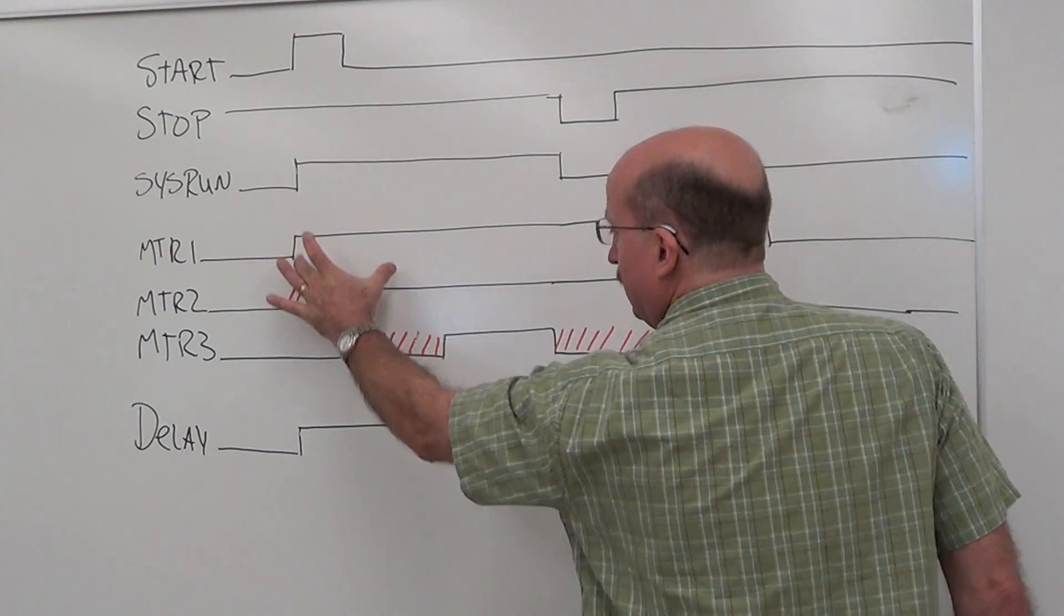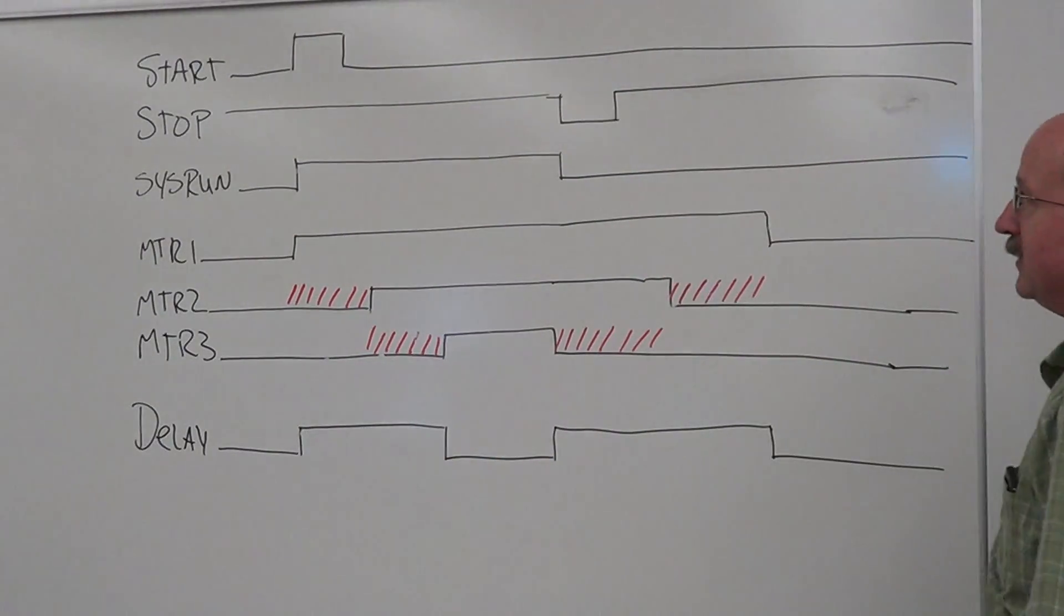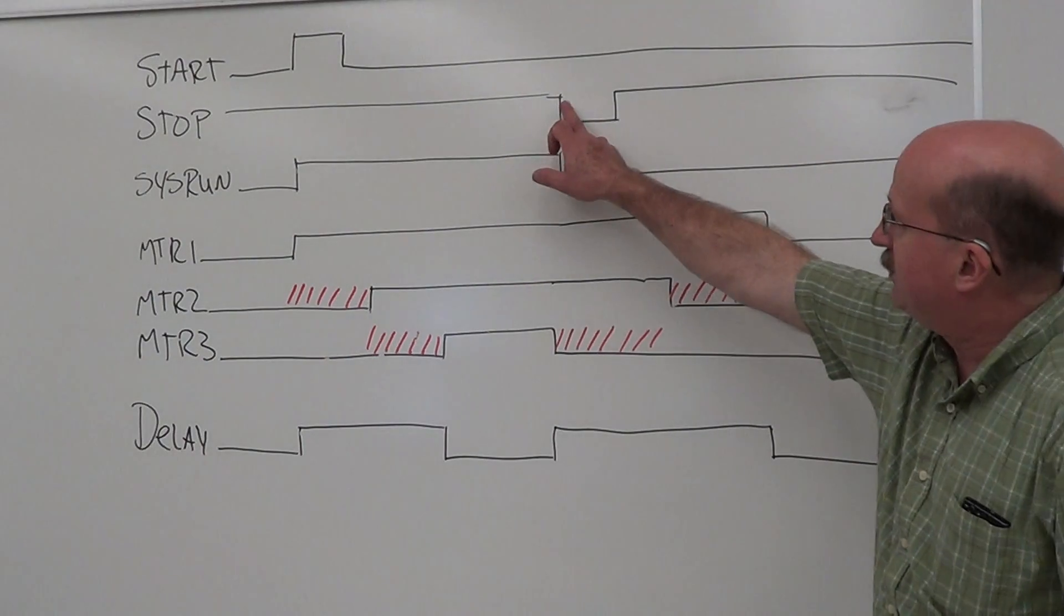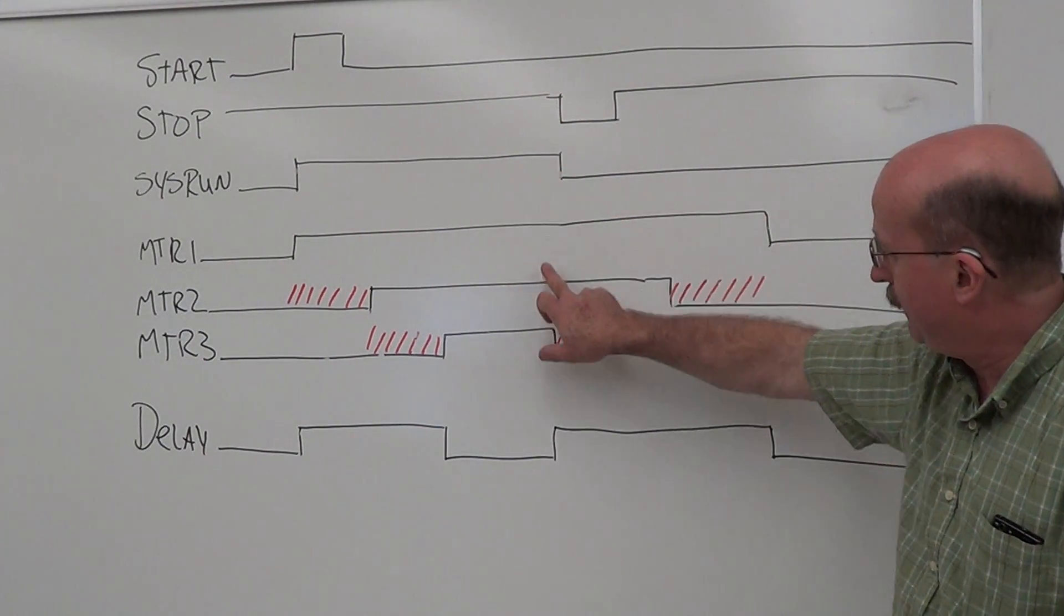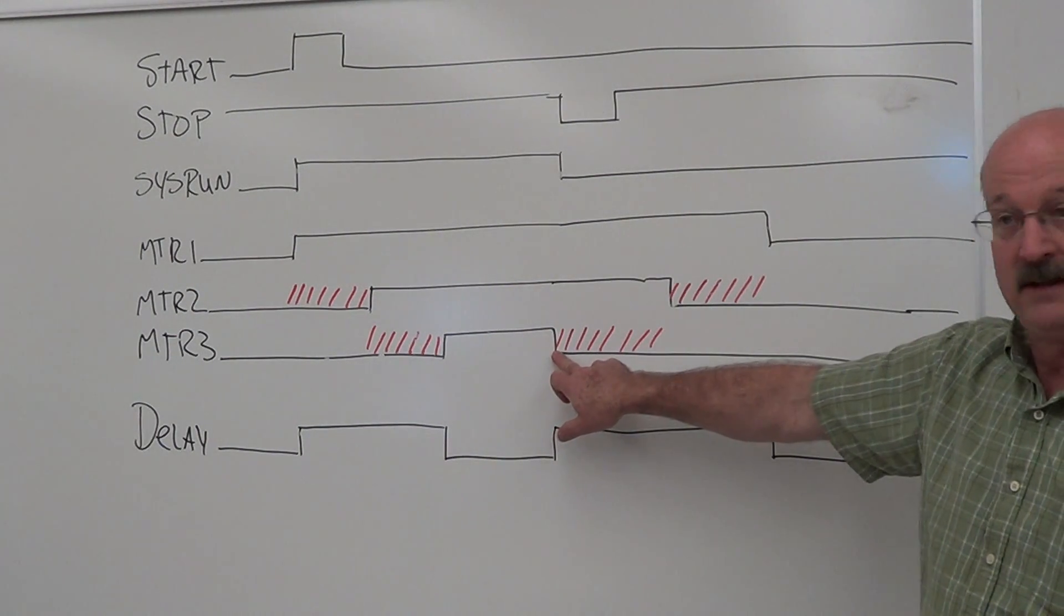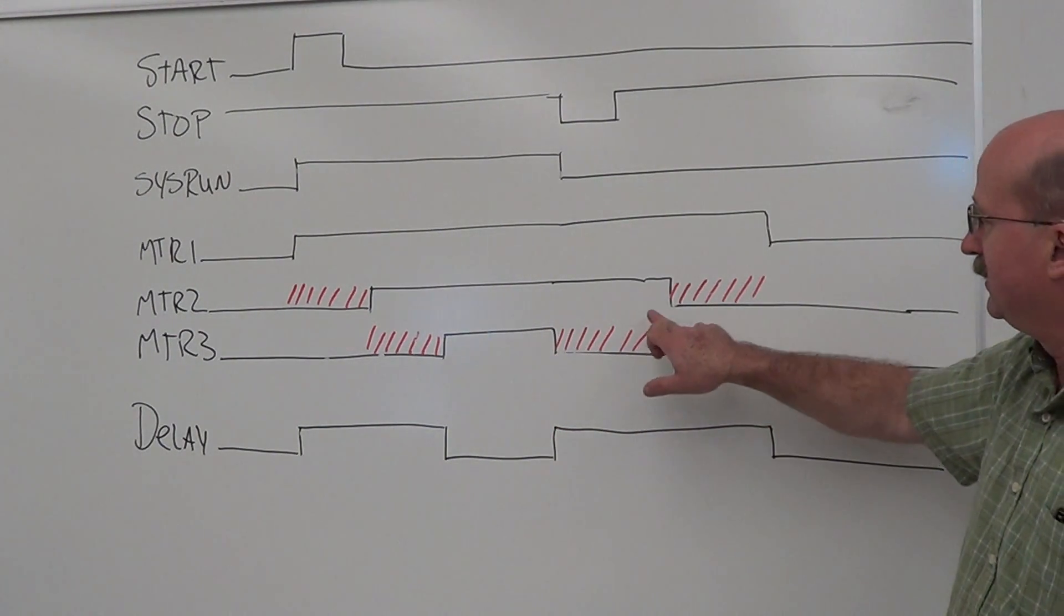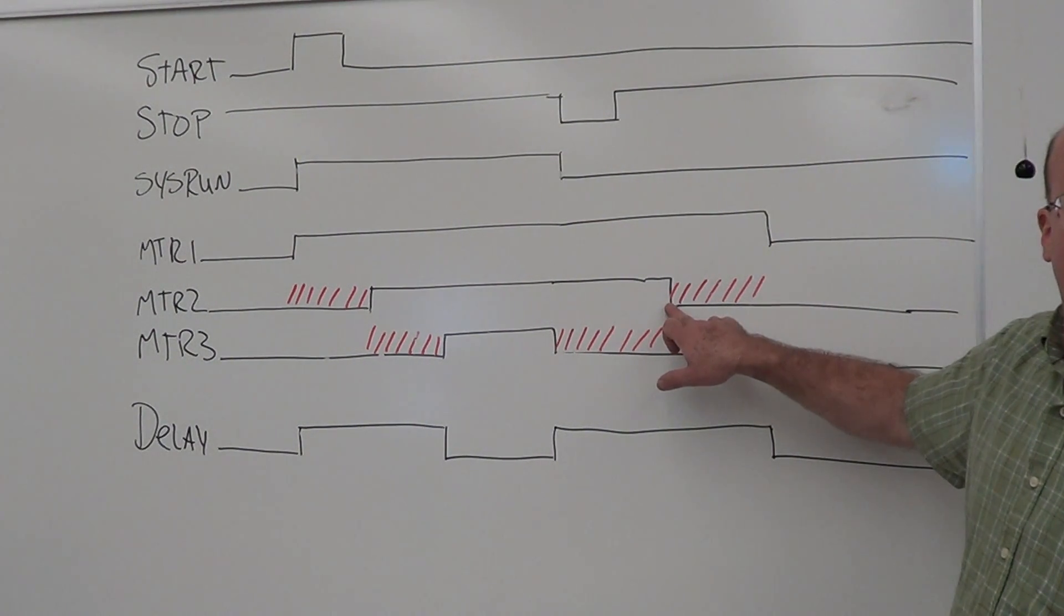Look at this - you know that we are in a delay period when motor one is on, or sys run is on. On-delay: sys run is on and motor three is off. There's our on-delay. Now we come up here and hit the stop button.